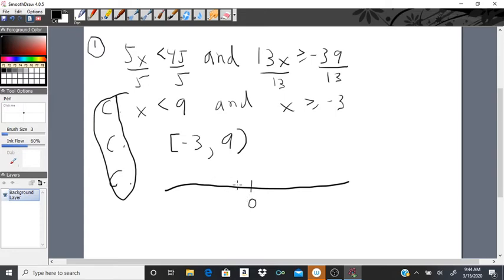We know that negative 3 is approximately about here, and 9, positive 9, is approximately about here. On the right-hand side of 0, and the negative number is on the left-hand side.